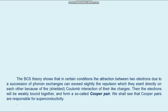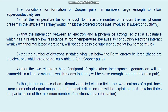BCS theory shows that under certain conditions, the attraction between two electrons due to the exchange of phonons can slightly exceed the repulsion between them due to the shielded Coulomb interaction of their like charges. The electrons will then be weakly bound together and form a so-called Cooper pair. The conditions for formation of Cooper pairs in numbers large enough to allow superconductivity are: first, that the temperature be low enough to make the number of random thermal phonons in the lattice small, so they don't inhibit the ordered processes involved in superconductivity.